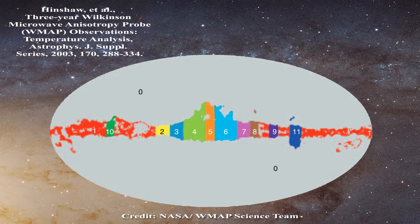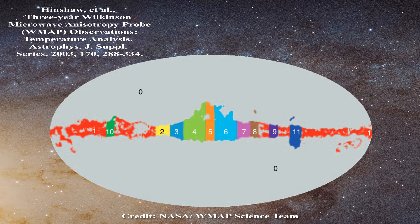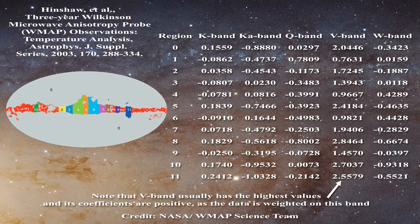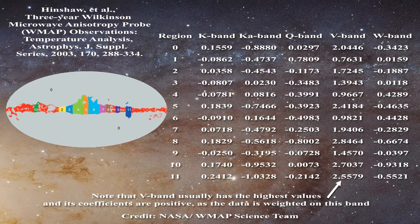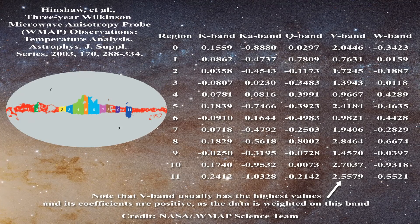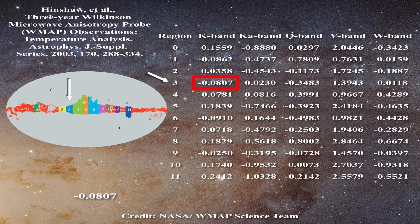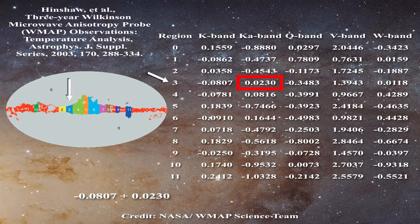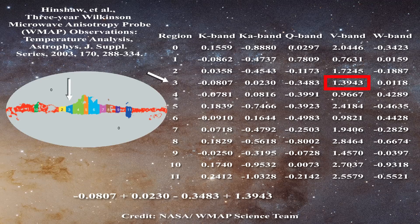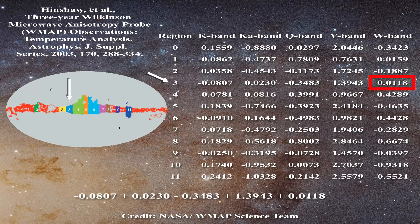The WMAP team takes a linear combination of microwave frequencies measured in each region of the galaxy in order to get rid of the galactic foreground and preserve the underlying cosmic fluctuations. This table depicts the coefficients used in the three-year average data set. In order to remove the galactic contribution from region 3, they take minus 0.0807 times K band, plus 0.0230 times Ka band, minus 0.3483 times Q band, plus 1.3943 times V band, plus 0.0118 times W band. That will all sum to 1.